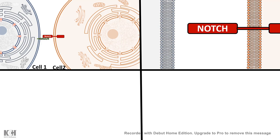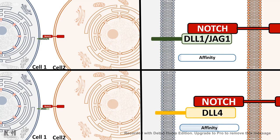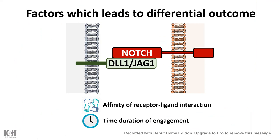There are different ligands for the Notch receptor and different kinds of Notch receptor itself, and their interaction affinity is very different. For example, DLL1 and JAG1 have very low affinity compared to DLL4, and this differential affinity gives rise to differential transcriptional programs, leading to different fate commitments or different cell identities. Two important factors are the affinity of the receptor-ligand interaction and the time duration of that interaction — a combination of both can give rise to different signaling outcomes.